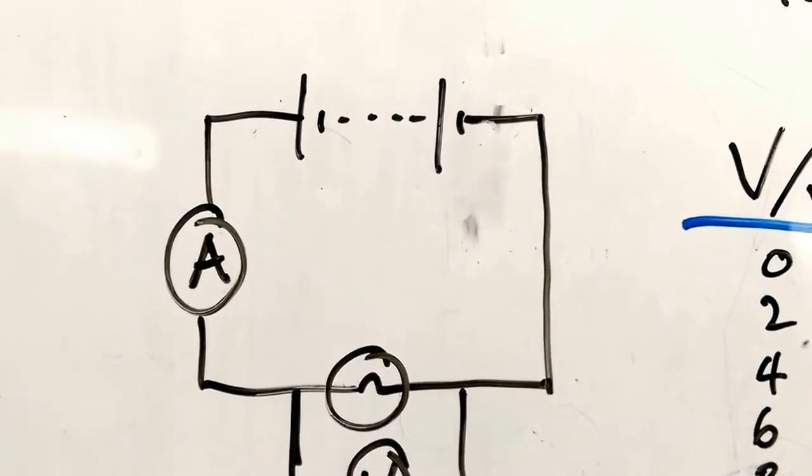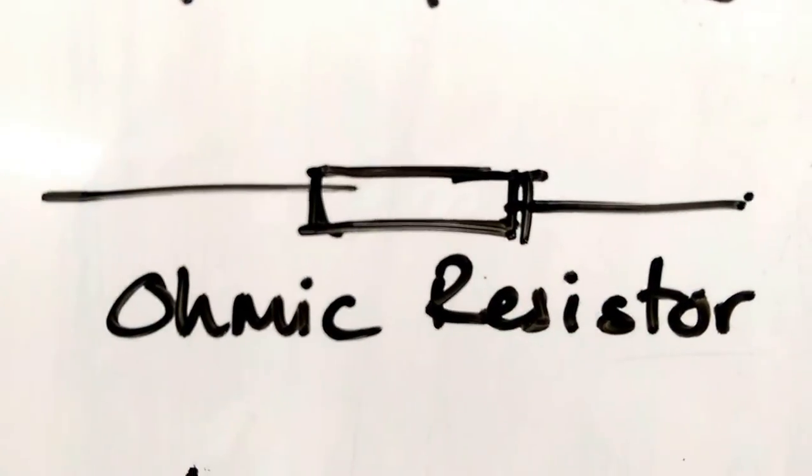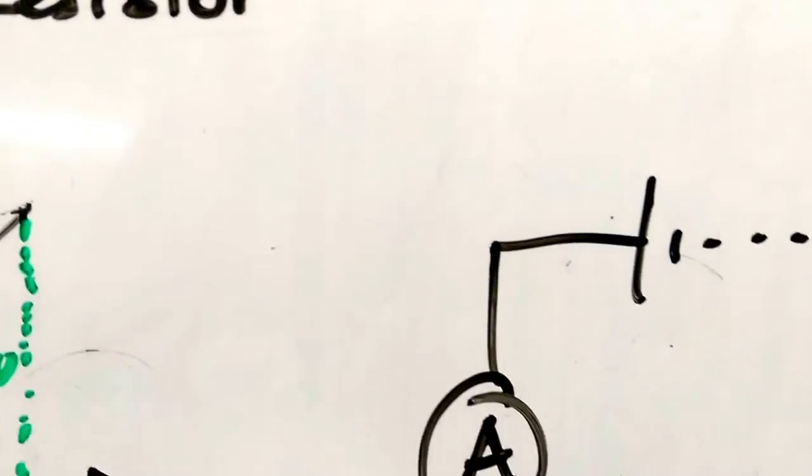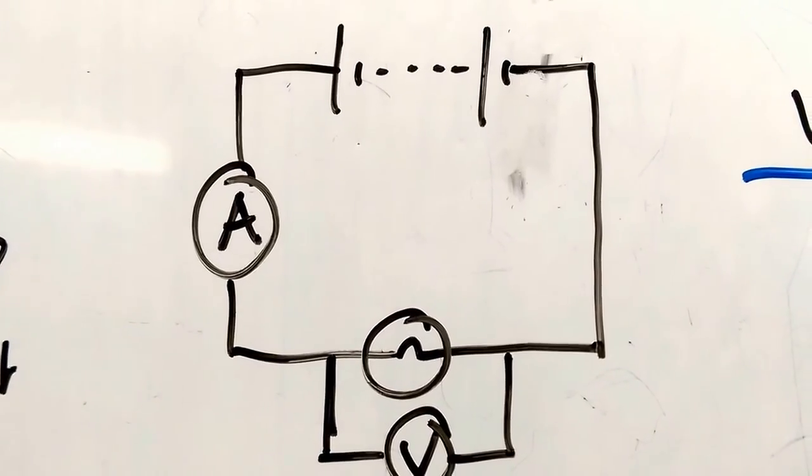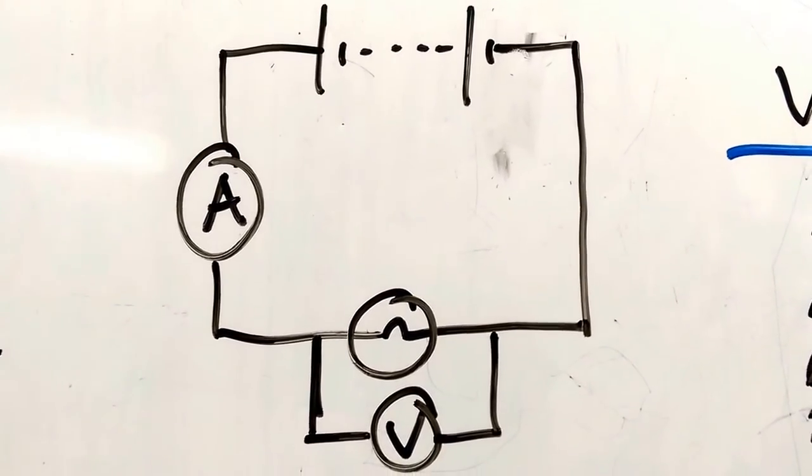That doesn't always apply. It only actually applies to ohmic resistors. Now other things, such as filament bulbs, actually behave differently. Here's the same experiment, but with a bulb instead of a resistor.